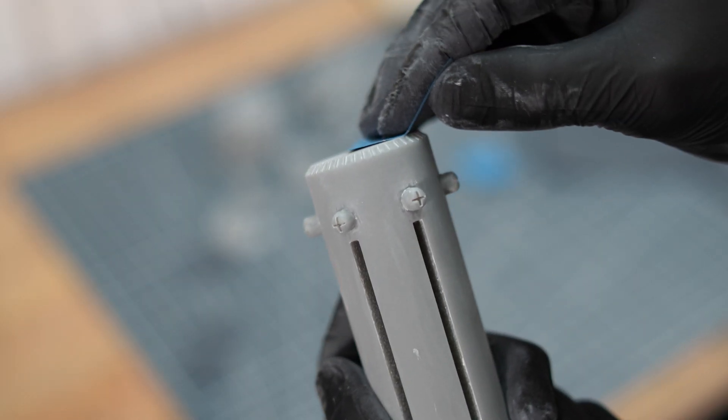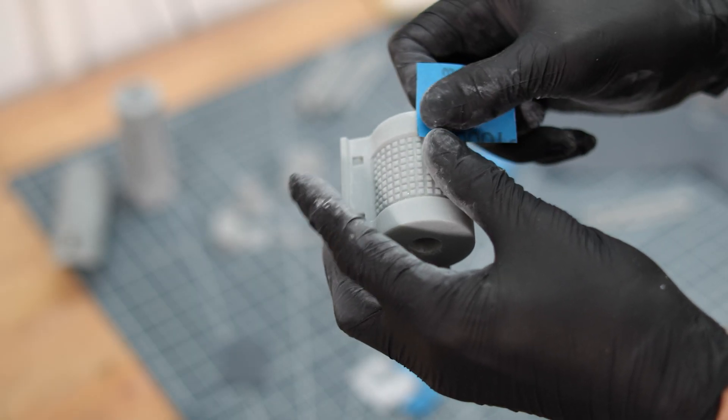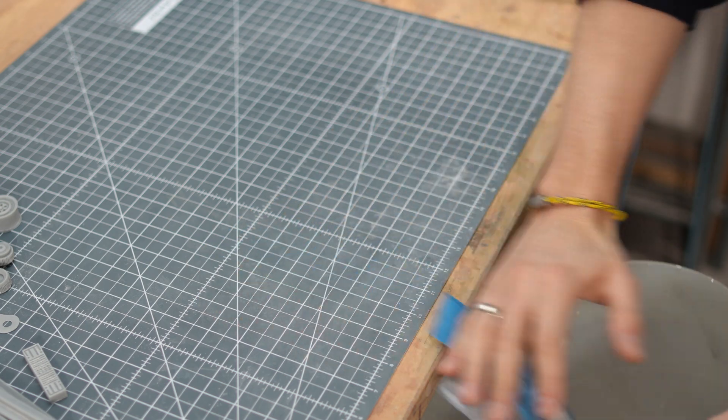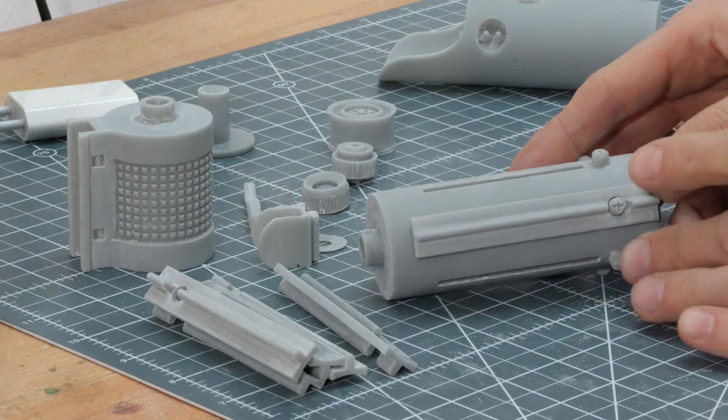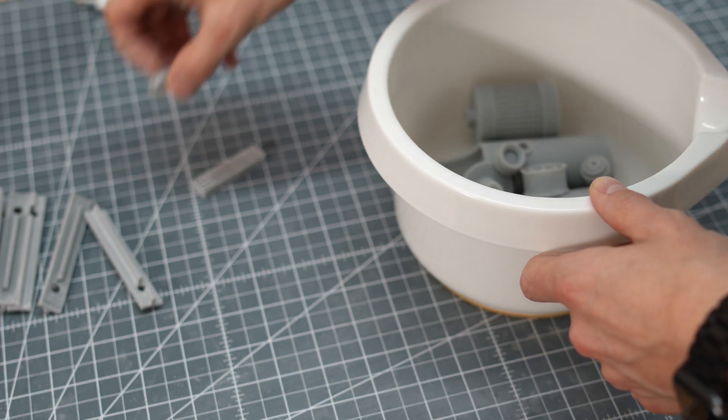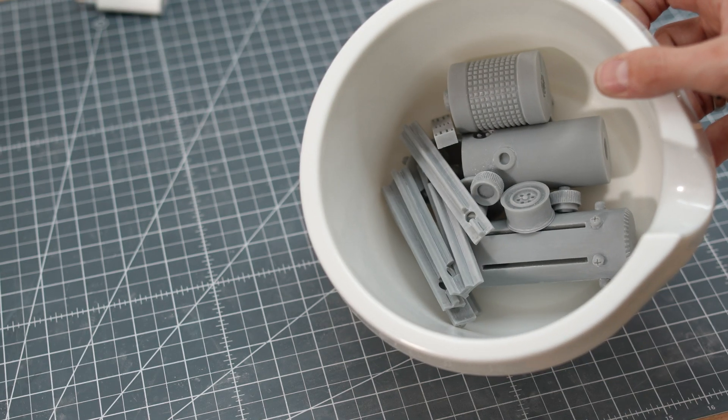Make sure everything is really nice and smooth. Pay attention to the details as any scratches you see now will definitely show up later. And when you're sure that everything is tip-top, you can clean the parts in water because we'll now be applying the conductive paint.